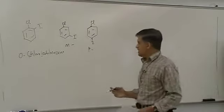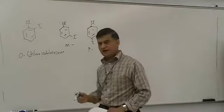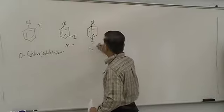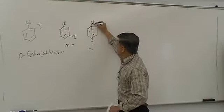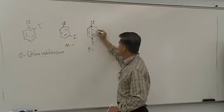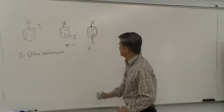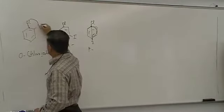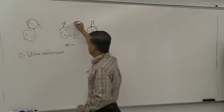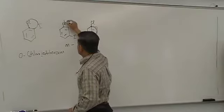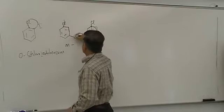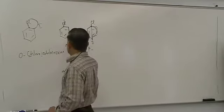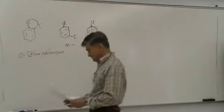To remember which one is ortho, meta, and para, I used to think of drawing a P — going from the first substituent to the next substituent group — and you can imagine that looks like a P, so that's para. For ortho, you can imagine an O. For meta, you can imagine an M, kind of sideways. Another way: 1,2 positions is ortho; 1,3 is meta; 1,4 is para.